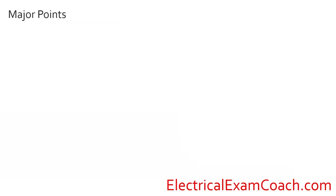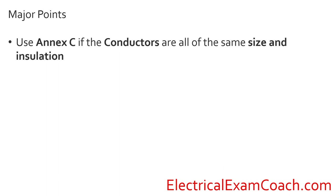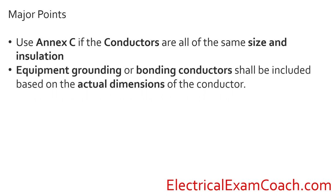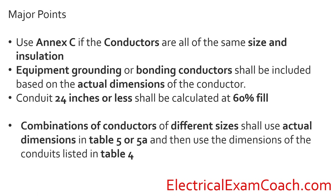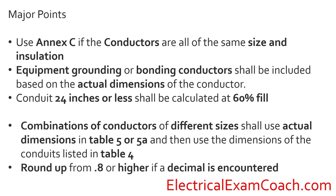Before the practice questions, let's hit the major points. Use Annex C when all conductors are the same size and insulation. Equipment grounding and bonding conductors must be included based on their actual dimensions — unlike box fill, every grounding conductor counts one for one. Nipples of 24 inches or less use the 60% fill column. A combination of different-sized conductors uses actual dimensions from Table 5 or 5A for compact conductors, and conduit dimensions from Chapter 9 Table 4. Round up when the decimal is 0.8 or greater.